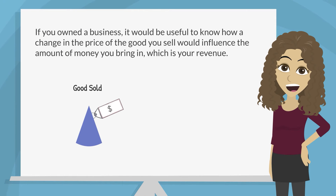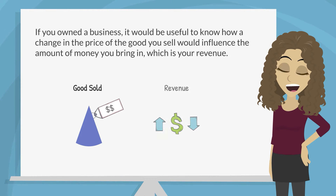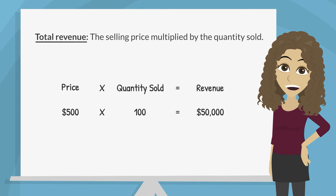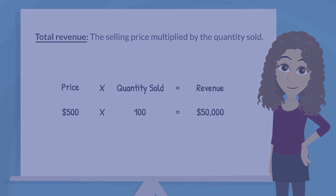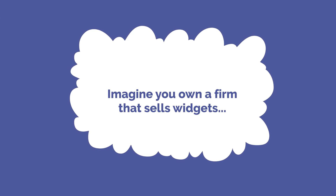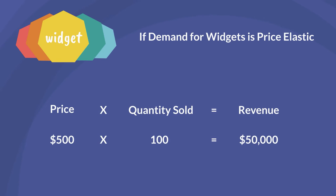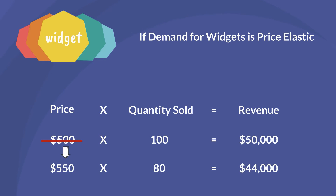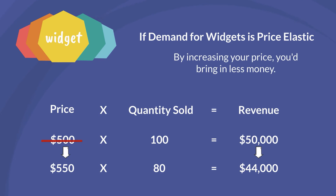If you owned a business, it would be useful to know how a change in the price of the good you sell would influence the amount of money you bring in, which is your revenue. Your revenue is calculated by multiplying the amount of a good sold by the price charged for that good. Imagine you own a firm that sells widgets. If demand for widgets is relatively price elastic and you decide to increase the price by 10%, you could expect the quantity you sell to decrease by more than 10%, which means your revenue would decrease. In this case, by increasing your price, you'd bring in less money.